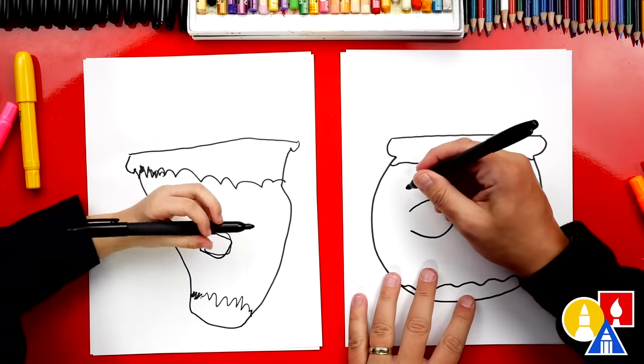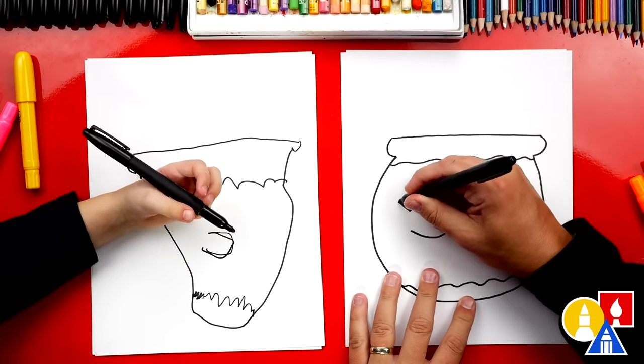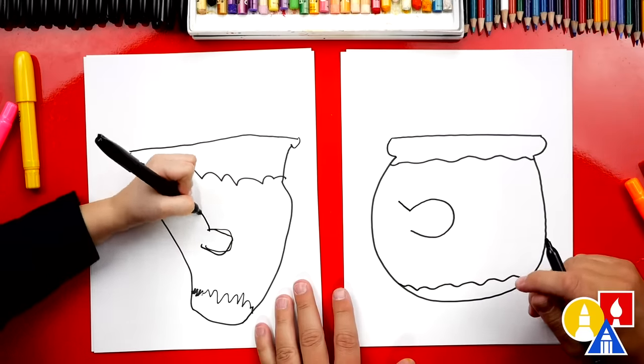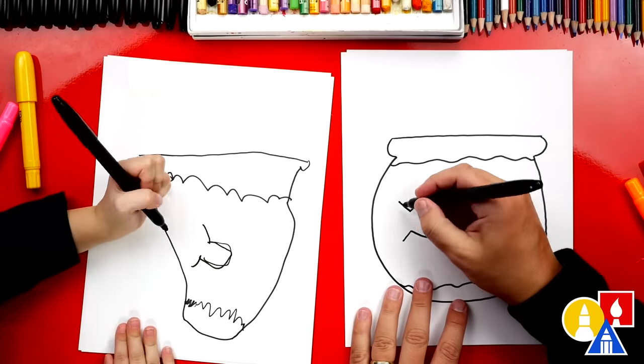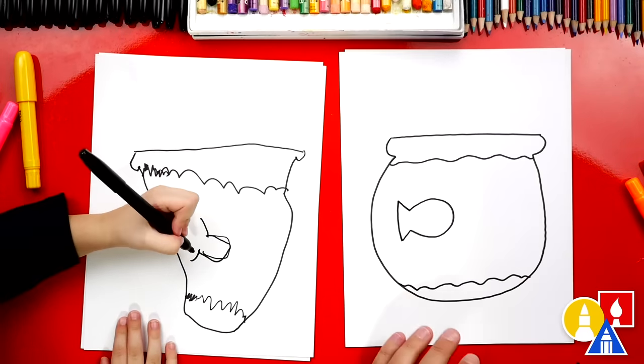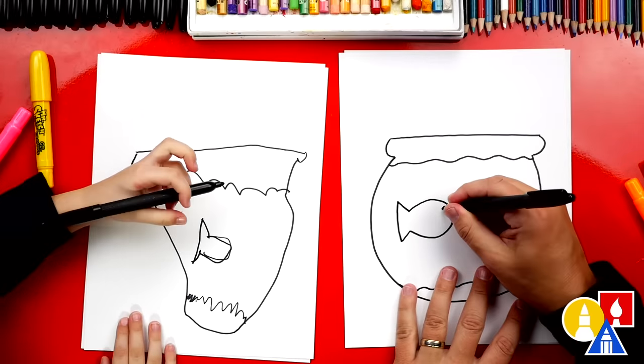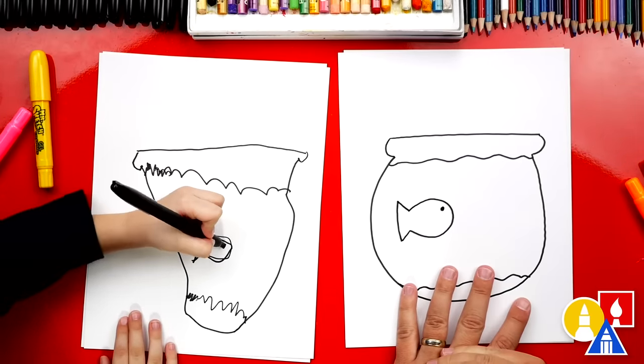Now let's draw the tail. We're gonna draw a line that comes up on the top and a line that comes down on the bottom. And then we can connect the top down to the bottom.